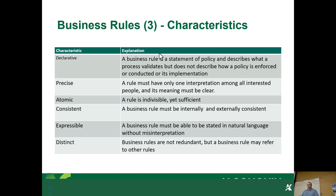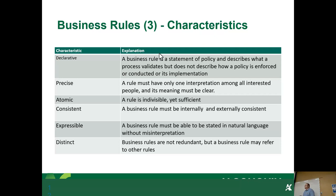When creating business rules, there are important characteristics. It has to be declarative — a statement of policy that describes what a process validates. It is literally a statement: 'Students will be on time for class' — that's a business rule. It must be precise: a rule must have only one interpretation amongst all interested people. 'Students must be on time for class' is clear — it tells you who, what, and when.